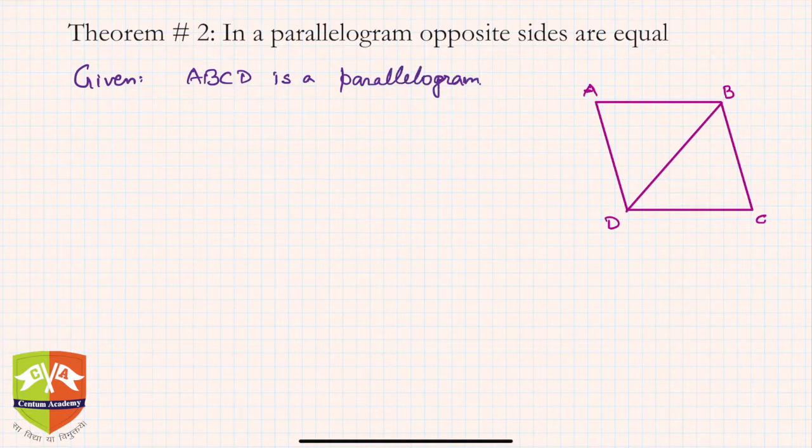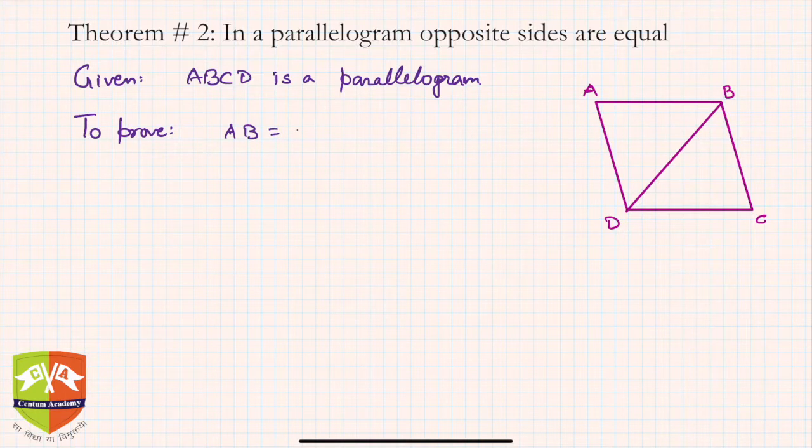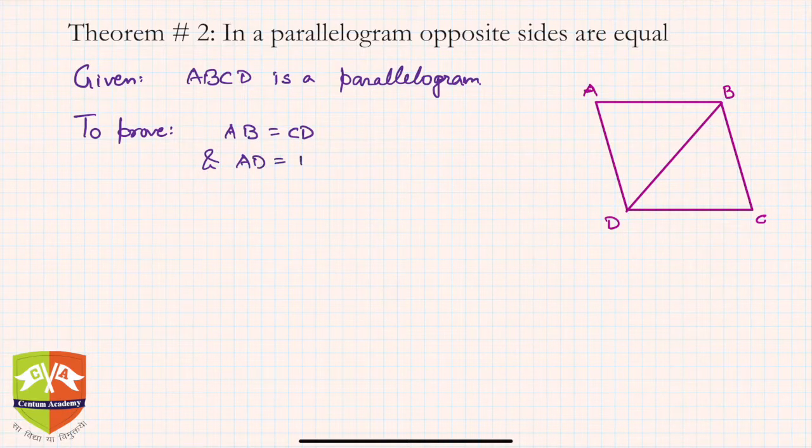To prove: what is to be proved? You have to prove that AB is equal to CD and AD is equal to BC.